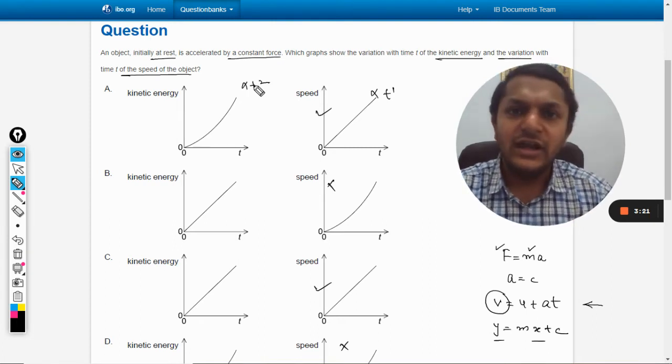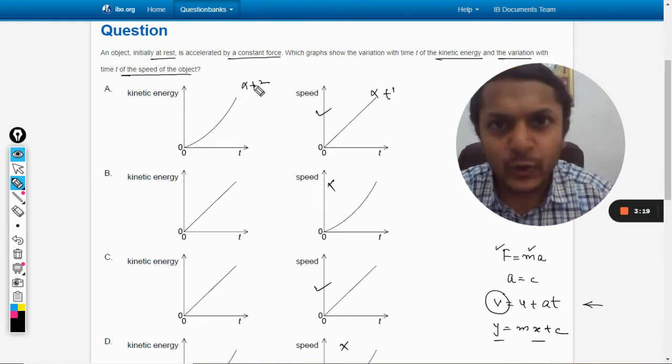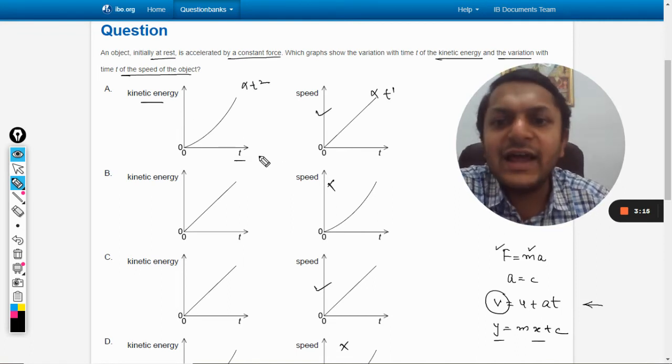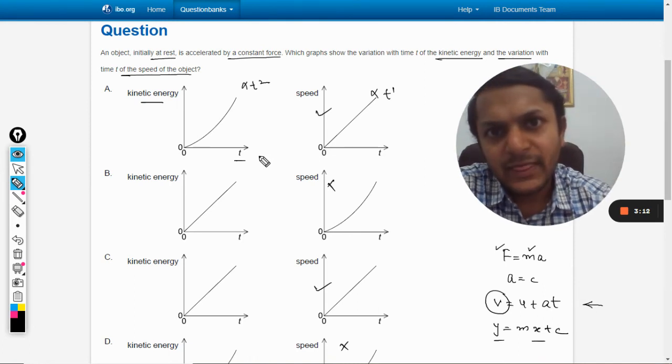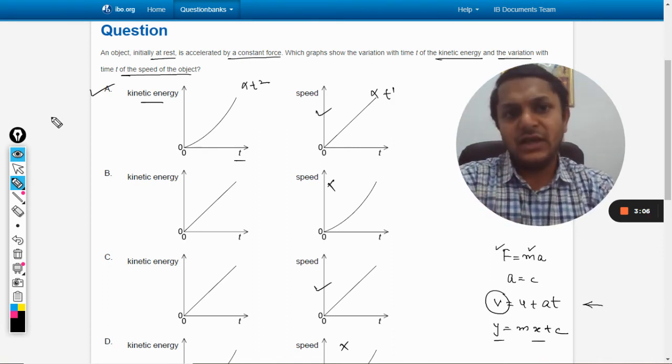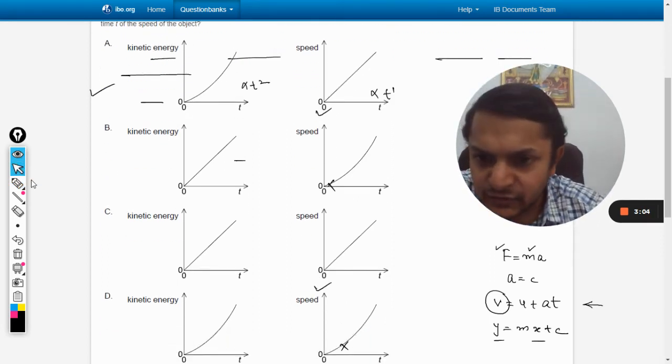It will become a quadratic equation. That's why the variation of kinetic energy with t will be a parabola. So your answer will be A. Let us verify the answer once.